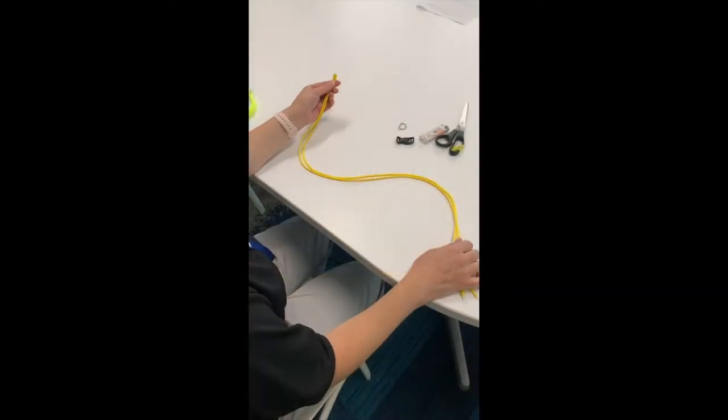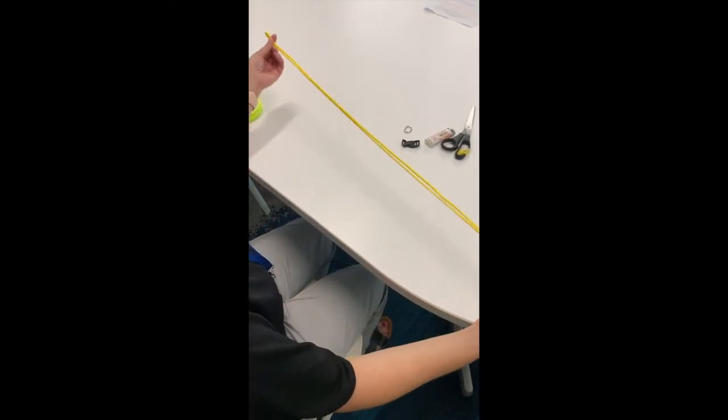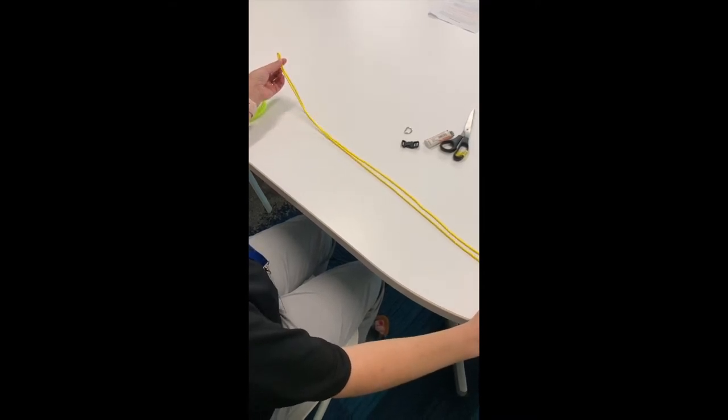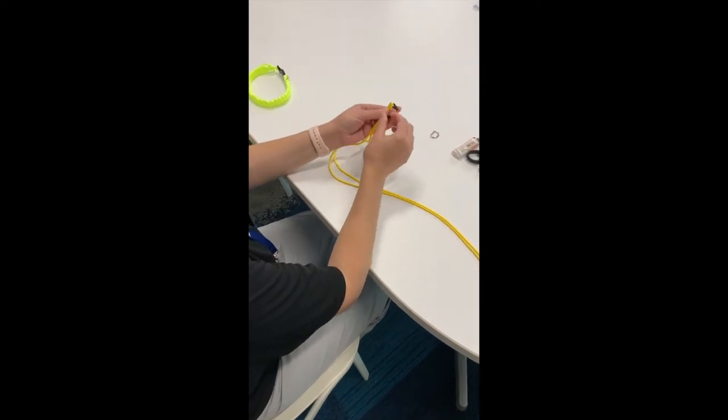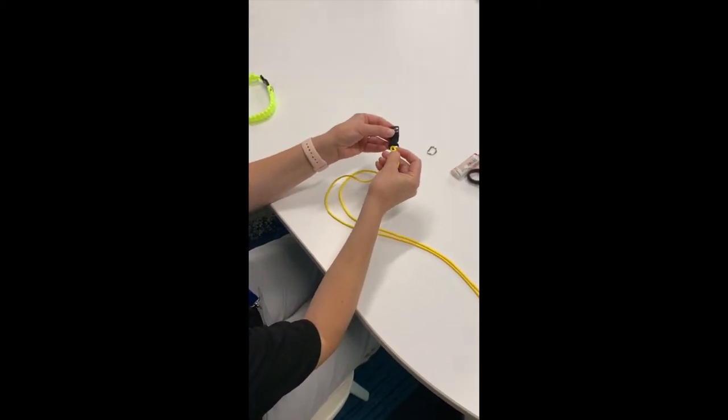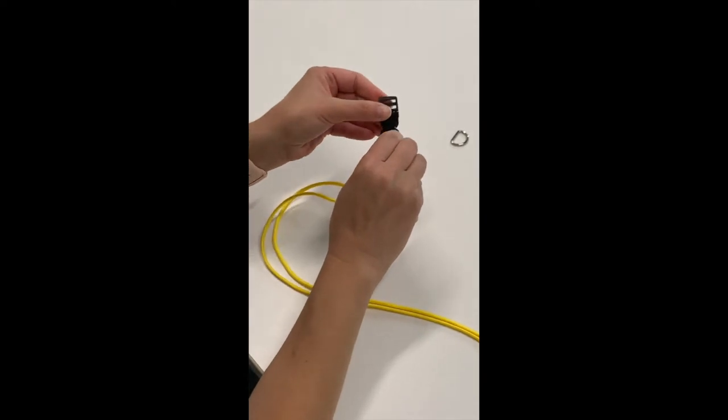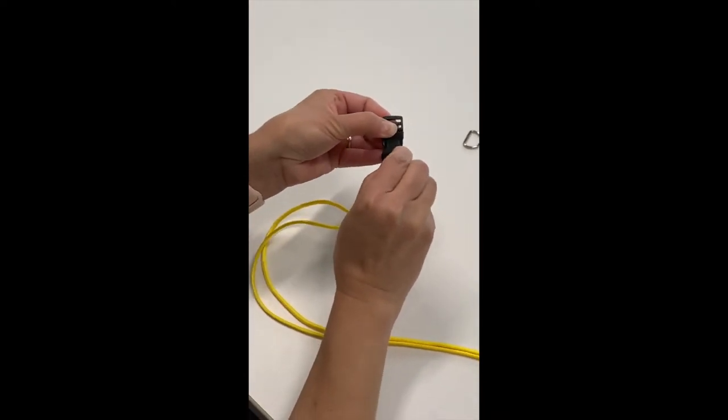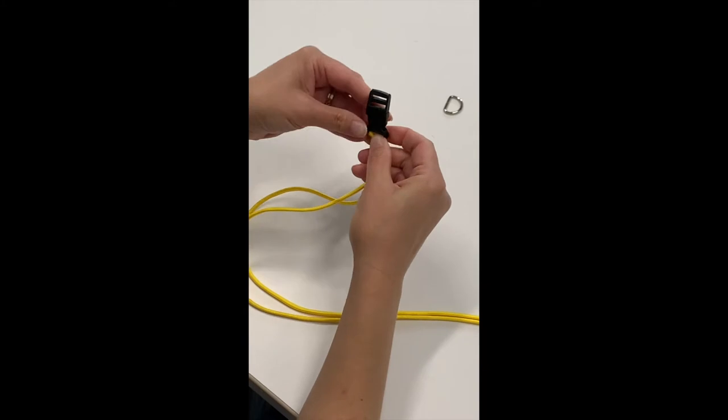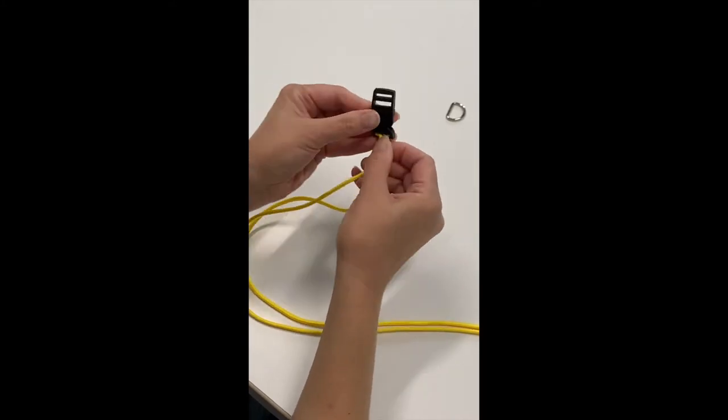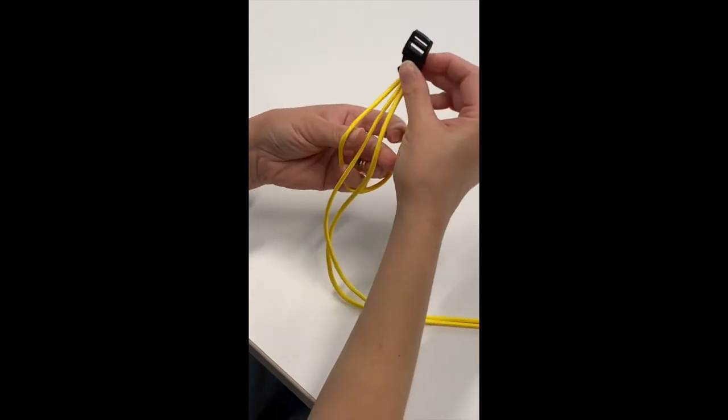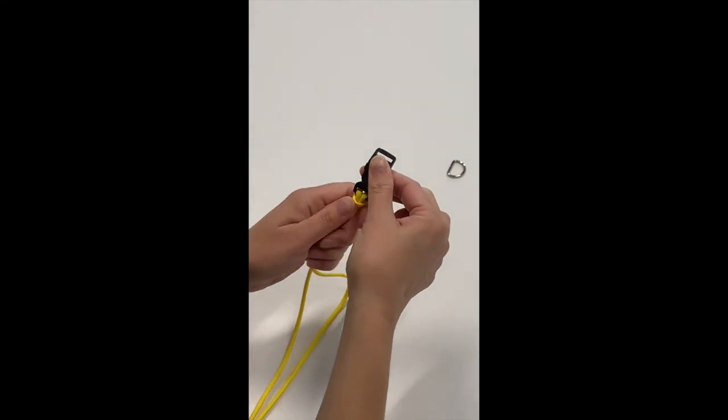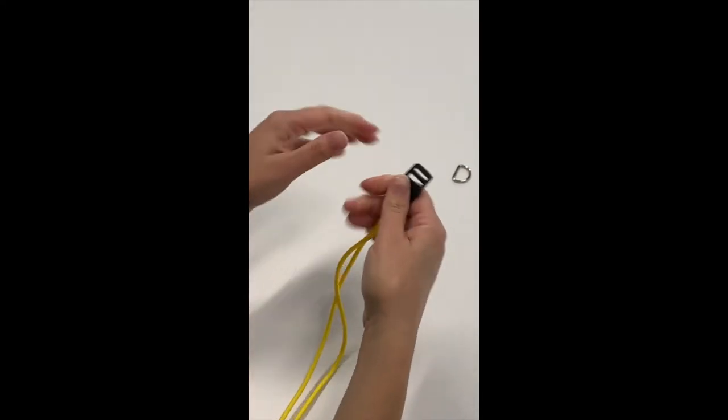So let's begin. The first thing you're going to do is take your paracord and fold it in half. You will take your clip and insert your paracord through one of the holes. This might take a second. And then you're going to pull through the paracord to create a knot. And there's your first knot.